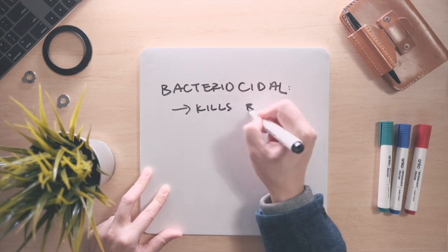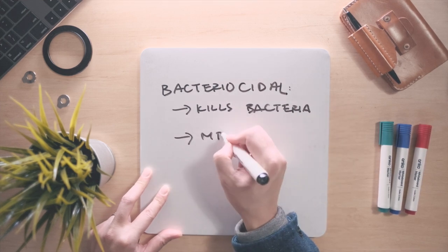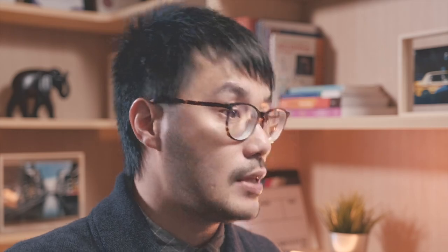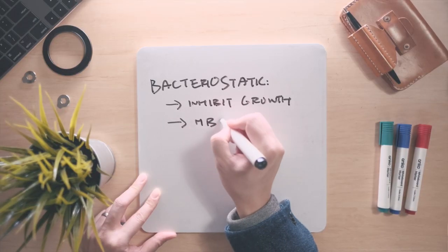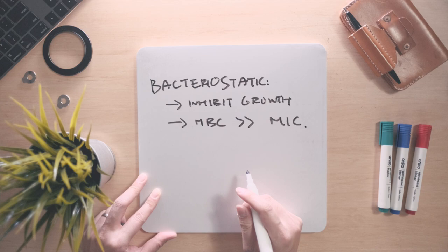If an antibiotic kills bacterial cells, its MIC will be close to its MBC. When we see no turbidity with bactericidal antibiotics, it is because the bacterial cells are all already dead. If an antibiotic is just inhibiting bacterial growth, its MBC will be much higher than its MIC. The absence of turbidity is due to a lower number of bacterial cells, which can still grow when subcultured onto agar plates.